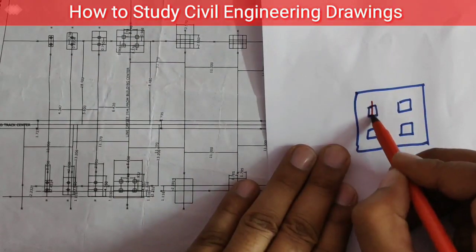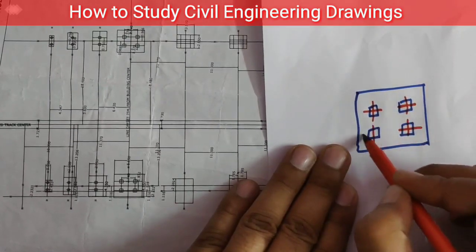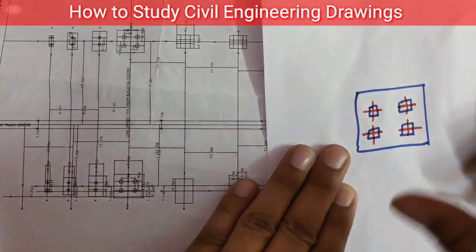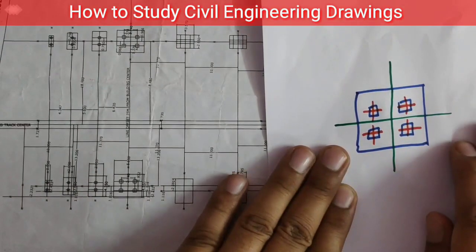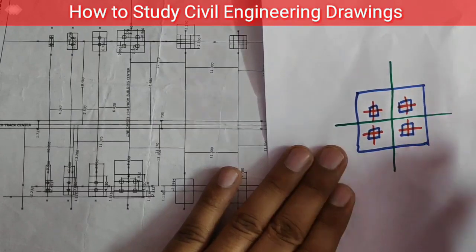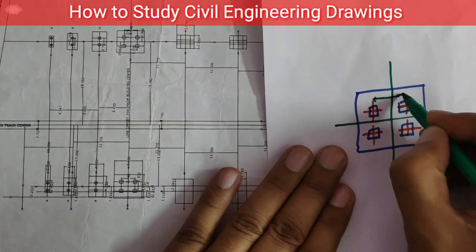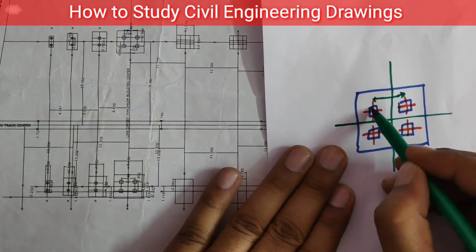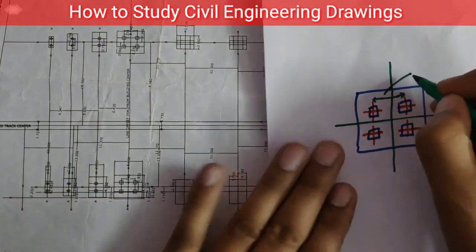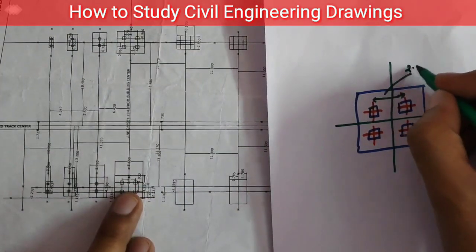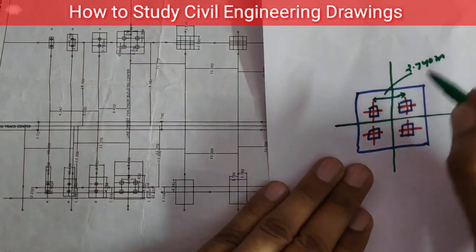Now from the center of this, here, the center of this you can see. This distance, the distance from the center of this column to center of this column, is given as 2.740 meters. Similarly...